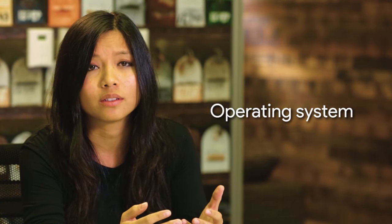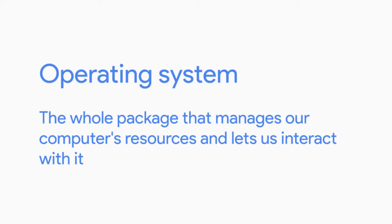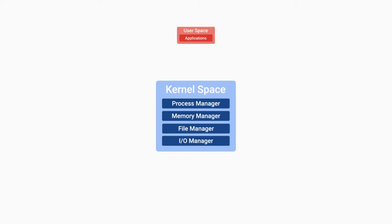We introduced the concept of an operating system in earlier lessons, but what is it exactly? A lot of us hear the term operating system and think of the interfaces of our desktops and phones — like the menus, buttons, and backgrounds. Technically these are part of the operating system, but it's a little more complex than that. An operating system is the whole package that manages our computer's resources and lets us interact with it.